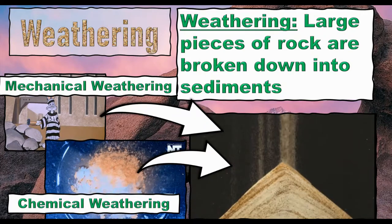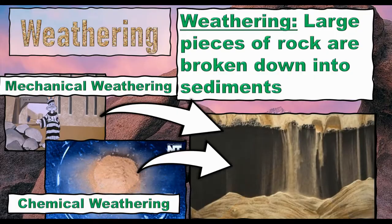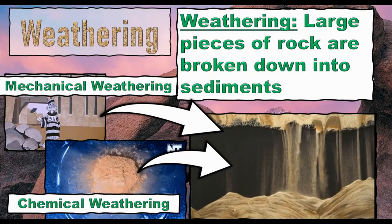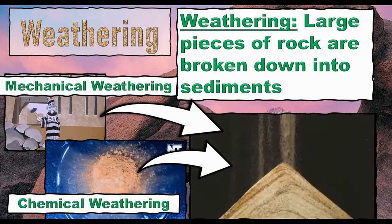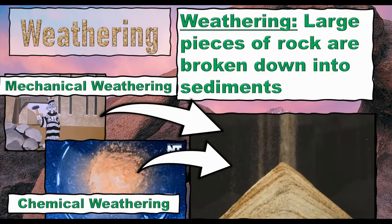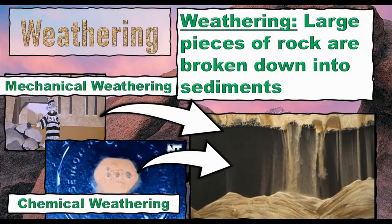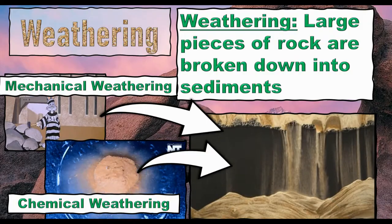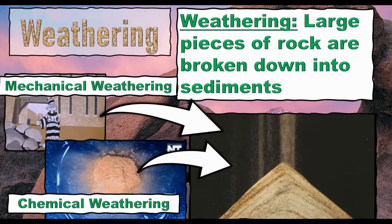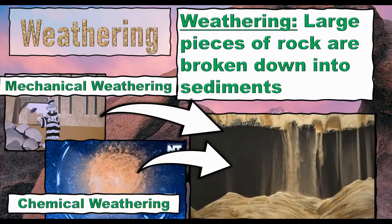But regardless of whether you're doing mechanical weathering or chemical weathering, the end result is that you have sediment. You take a large chunk of rock, you break it up, and you end up with sediment — smaller pieces of rock like sand, pebbles, or gravel.